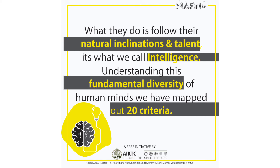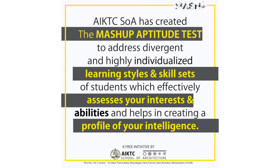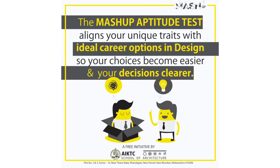Understanding this fundamental diversity of human minds, we have mapped out 20 criteria. Anjuman-a-Islam's Kalsekar Technical Campus School of Architecture has created the Mashup Aptitude Test to address divergent and highly individualized learning styles and skill sets of students, which effectively assesses your interests and abilities and helps in creating a profile of your intelligence.